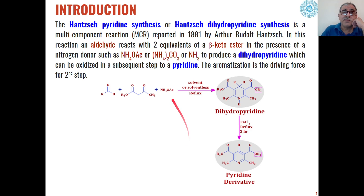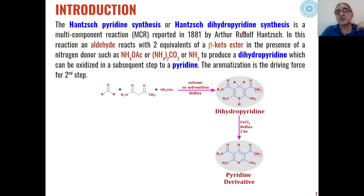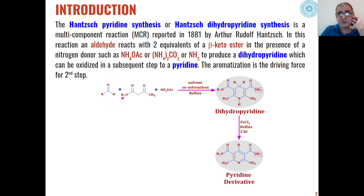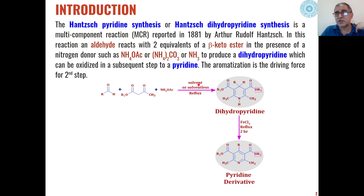This reaction is ultimately used for the synthesis of pyridines. It is also called Hantzsch Pyridine Synthesis or Hantzsch Dihydropyridine Synthesis because in the first step we synthesize dihydropyridines, which are further oxidized to pyridines. This reaction is a multi-component reaction where carbonyl compounds react with beta-ketoesters in the presence of a nitrogen source like ammonia, ammonium carbonate, or ammonium acetate, in solvent or solventless media using modern methods like microwave or ultrasonics.